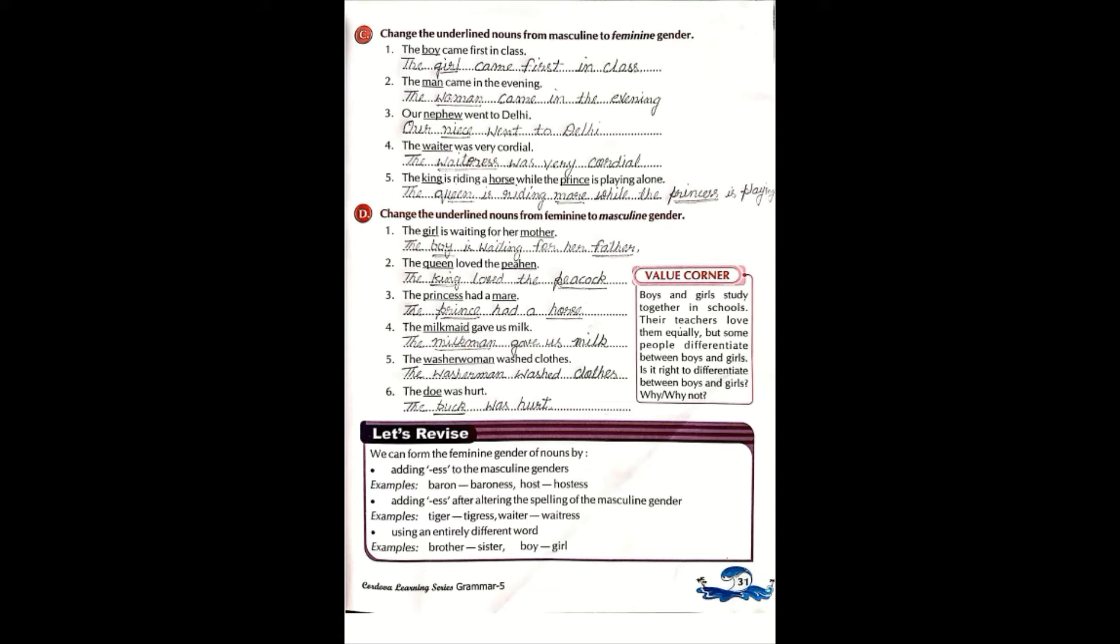Now we will do exercises and discuss them. Yesterday you read about the types. There are four types of genders. You read the rules. You read three rules. The first rule was simple: when we convert masculine into feminine gender, we have to apply only E-S-S.